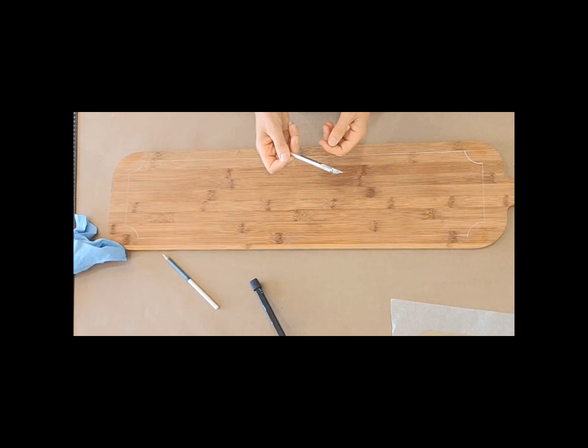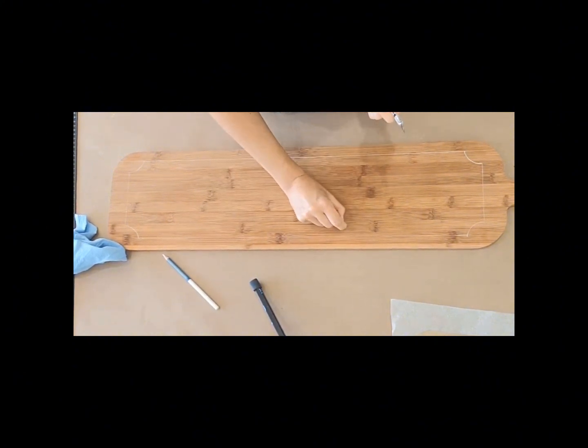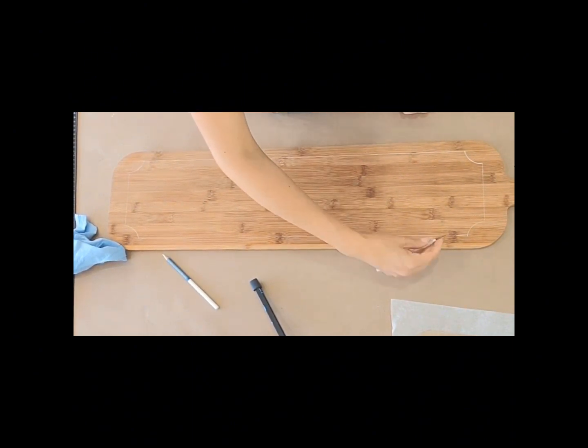I have this exacto blade. I'm going to put a new blade on it, a nice sharp blade, and I'm going to score the edge before I tape it. The reason I do that is so that if any paint seeps under the tape—which happens all the time, I don't care how much you press down on the tape—it doesn't matter, you will get a little bit that seeps under.